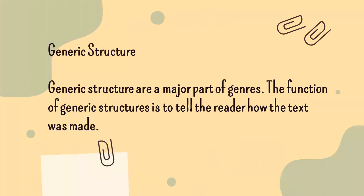Now is generic structure. Generic structures are a major part of genres. The function of generic structures is to tell the reader how the text was made. According to generic structures analysis can make me more understanding about the management of genres. English is one of the languages that has many types of text and each text has a general structure.